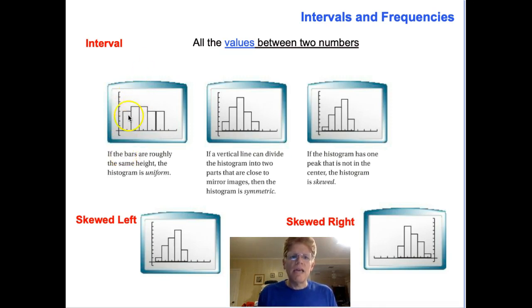We're going to talk about three different shapes of data. Number one, if the bars are roughly even across there, then that is considered a uniform distribution in your histogram. It's uniform because it's roughly all the same data. If your values make basically a symmetrical shape, where if I was to draw a line right down the middle, and it creates basically the same shape on both sides, those are called symmetric.